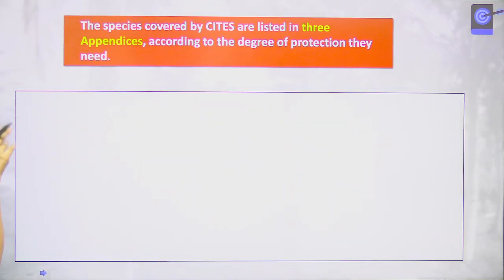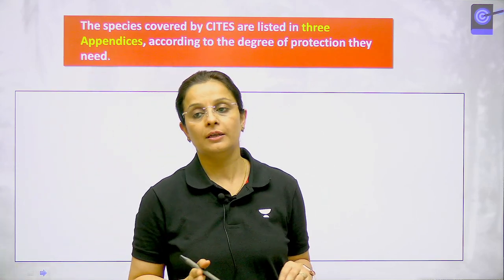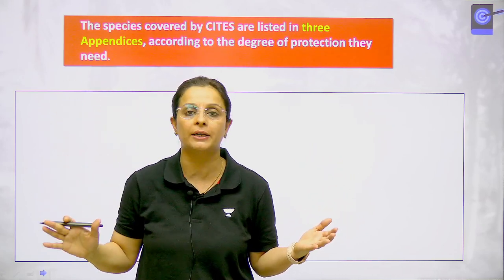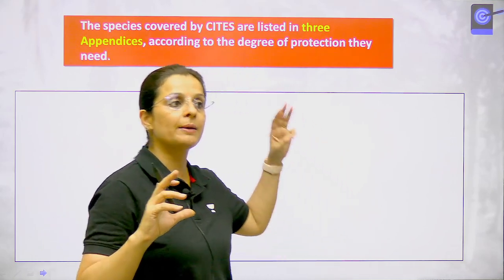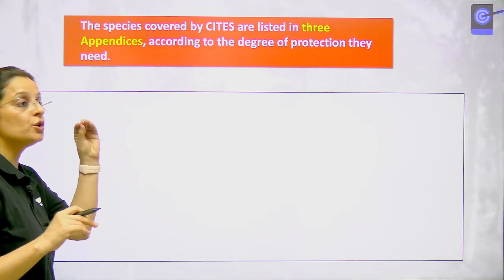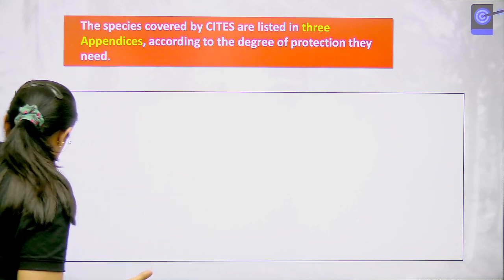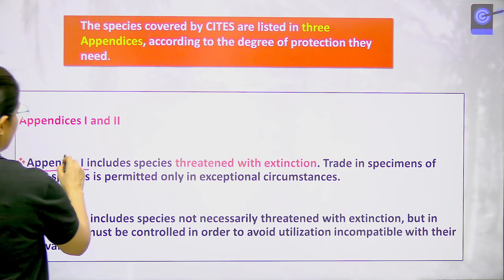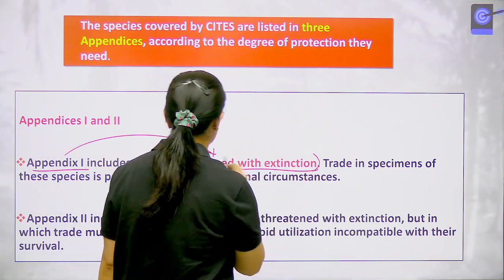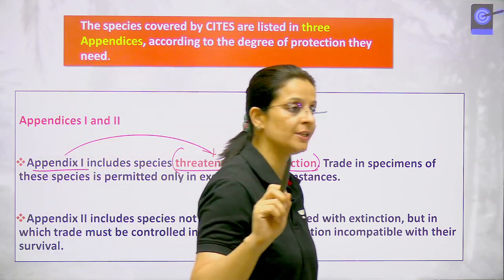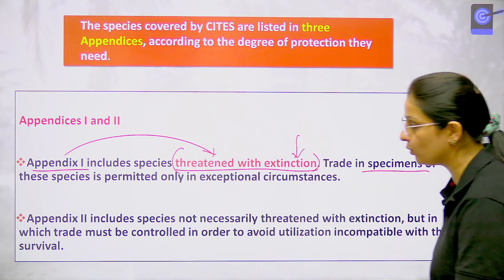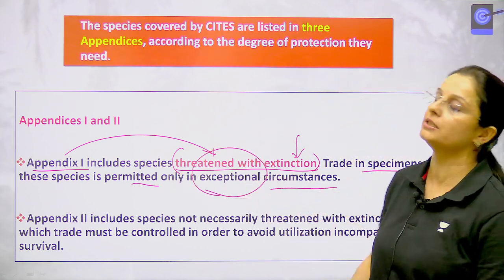Whatever species are covered under CITES are listed in three appendices based on the degree of protection they need — which may be near threatened, endangered, critically endangered, or vulnerable. Three appendices tell us what protection any species requires. In Appendix 1 are those species which are already threatened with extinction.